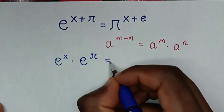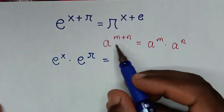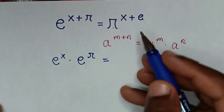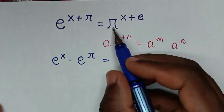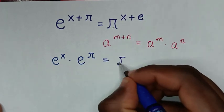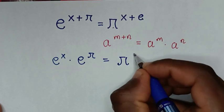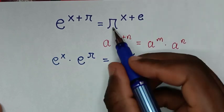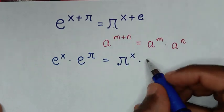On the right side, π^(x+e) is the same as π^x times π^e.